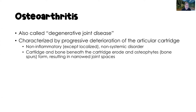Osteoarthritis is a degenerative joint disease and it is characterized by progressive deterioration of the articular cartilage. It is non-inflammatory except maybe at localized areas — such as the knee, the shoulder, and the hands — and it is considered a non-systemic disorder. The cartilage and the bone beneath the cartilage are eroded, and osteophytes, also called bone spurs, are forming, resulting in narrowed joint spaces.